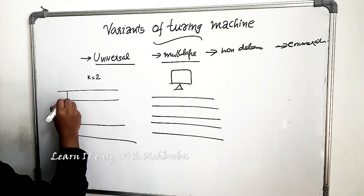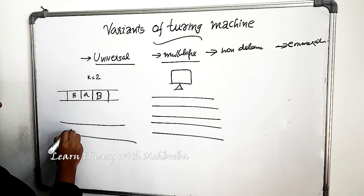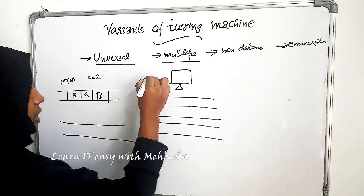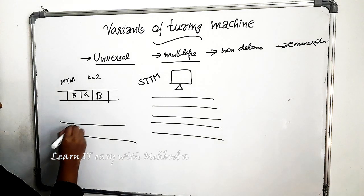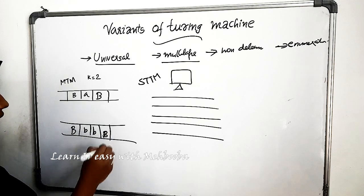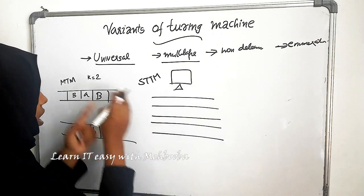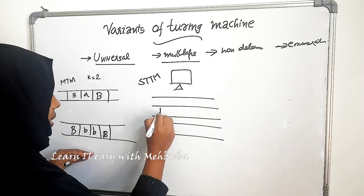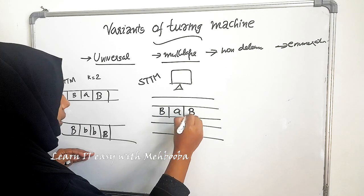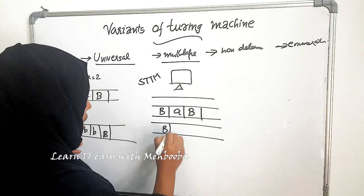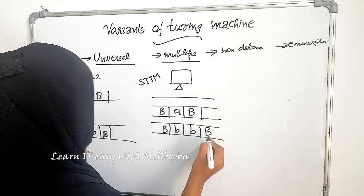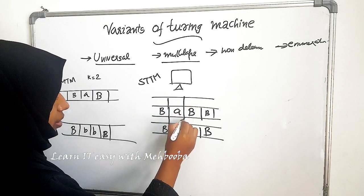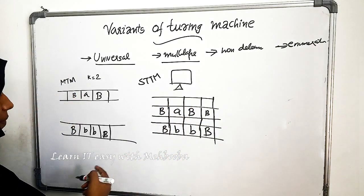In the first track, for example, if the contents are like blank, A, blank — this is tape one for the multi-tape Turing machine — we can have a single-tape Turing machine with 2×K tracks. If it is having 2 tapes, we can have 4 tracks. The first, second, and fourth tracks will contain these contents — for example, B, A, blank, etc. The other 2 tracks will store the information regarding the tape heads. The positions of tape heads will be recorded in these 2 tracks.